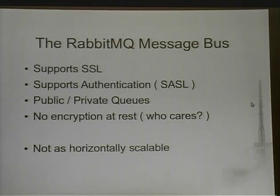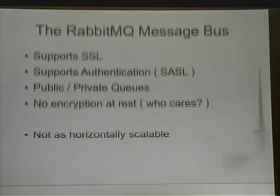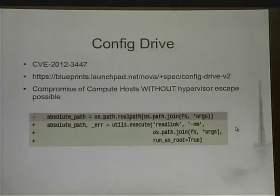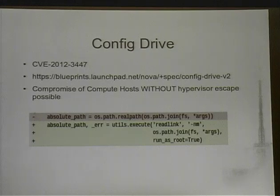RabbitMQ is not as horizontally scalable — you're doing a cluster deployment kind of like MySQL cluster. One major complaint about RabbitMQ is that diagnosing problems in the queue is nearly impossible because you can't see anything. The APIs backend to various libraries, clients use the requests module in Python, and there are many SDKs — Rackspace supports a whole bunch in multiple languages. Config Drive provided the potential for a compute host compromise via the hypervisors without escaping the hypervisor — you could inject things back into the host that was providing the config drive — but it's been patched.